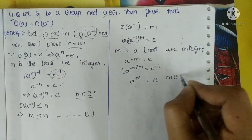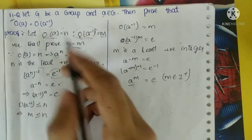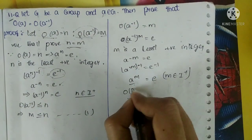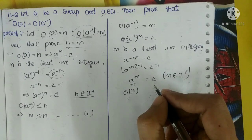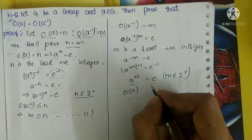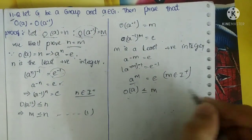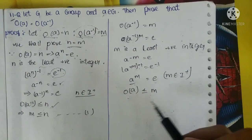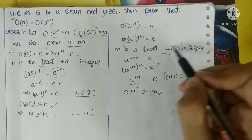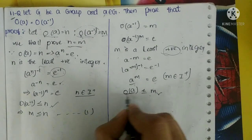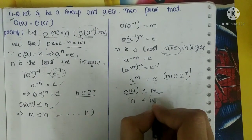So A^M = E, and M belongs to positive integers. Now since A^M = E and O(A) is the least positive integer with this property, O(A) is less than or equal to M — so O(A) ≤ M.